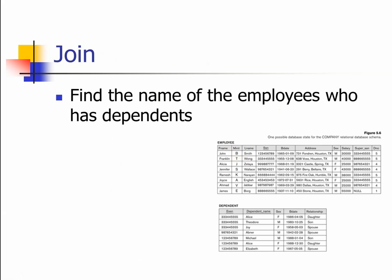Find the name of the employee who has dependents. If you look into the dependent table, you can see there are three people who have dependents — one has three dependents, another has only Abner, and the last one has another three dependents. To answer this question we need to join the dependent table with the employee table.